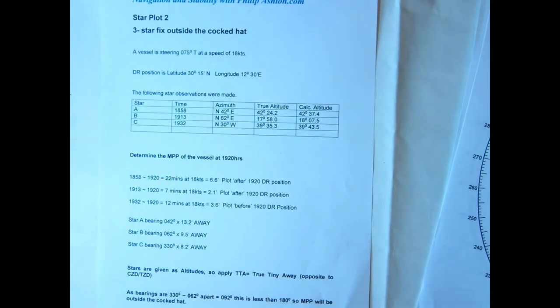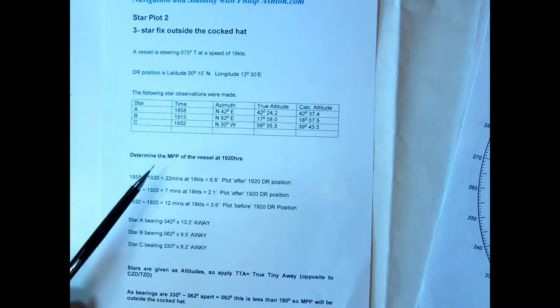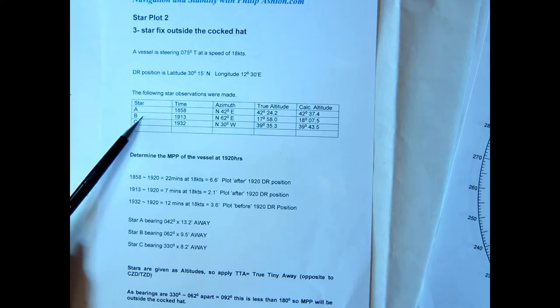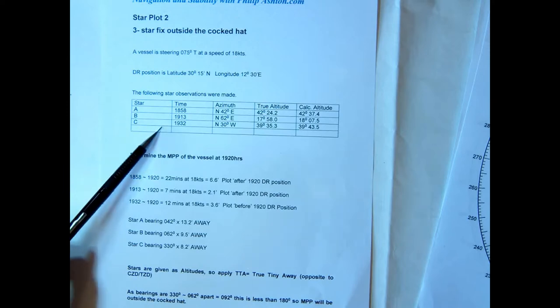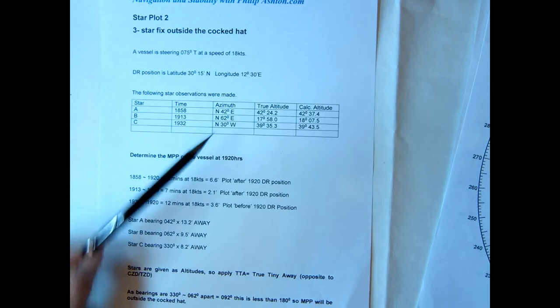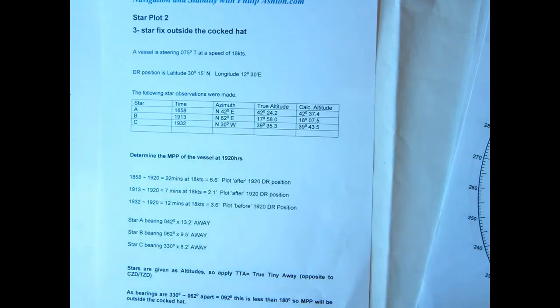This vehicular one gives us a three star fix outside of the cocked hat. The vessel is steering 075 at 18 knots, DR position for 1920. Stars A and B are observed before 1920, star C afterwards. Azimuth bearings are given quadrantially so we have to convert those, and altitude is given.